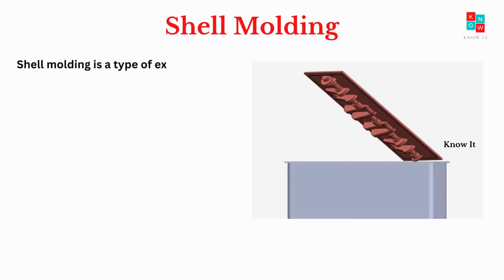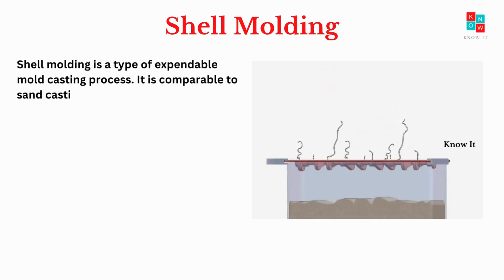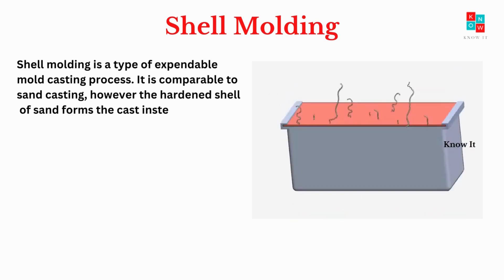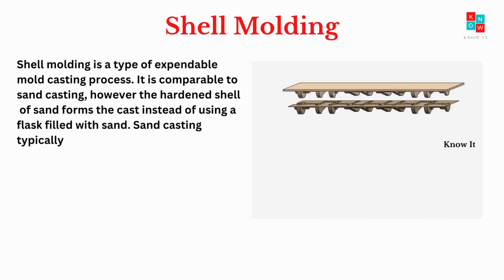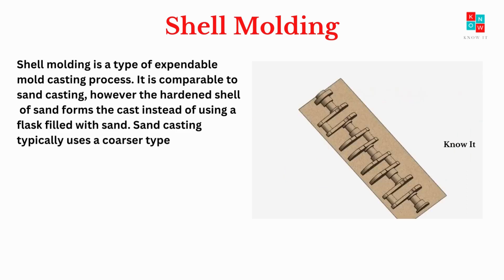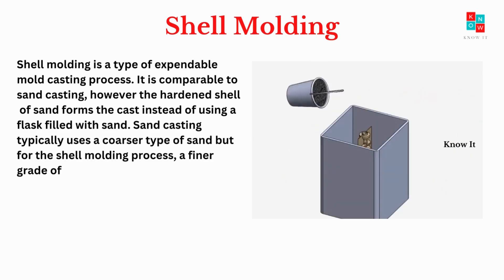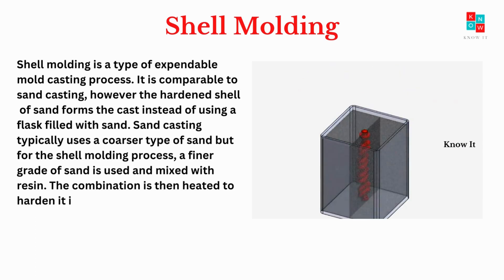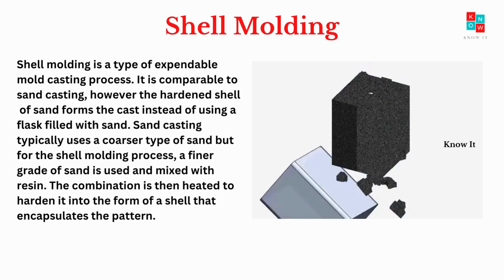Shell molding is a type of expendable mold casting process, comparable to sand casting. However, the hardened shell of sand forms the cast instead of using a flask filled with sand. Sand casting typically uses a coarser type of sand, but for the shell molding process, a finer grade of sand is used and mixed with resin. The combination is then heated to harden it into the form of a shell that encapsulates the pattern.